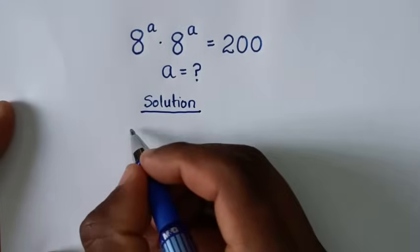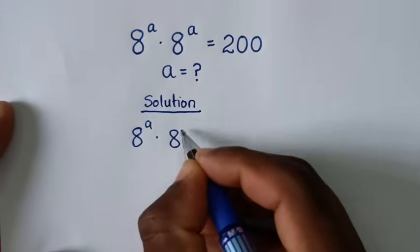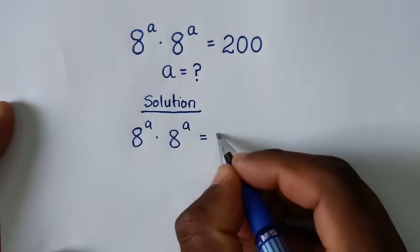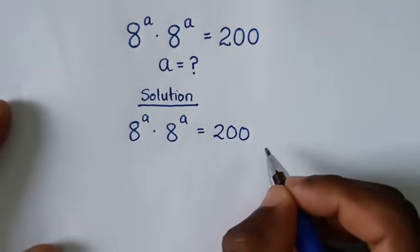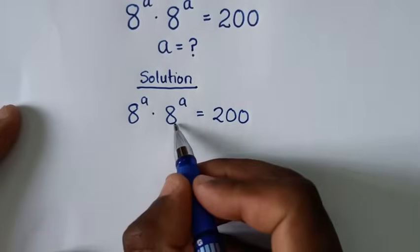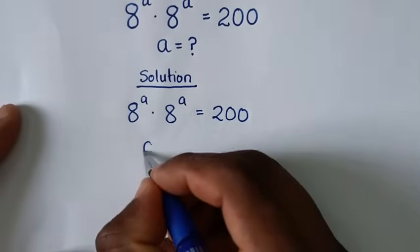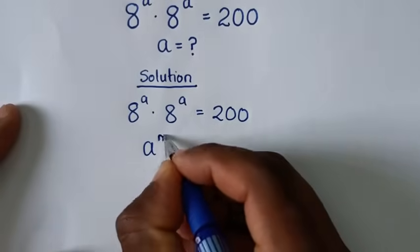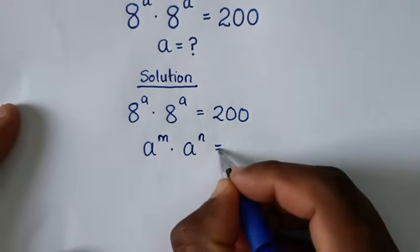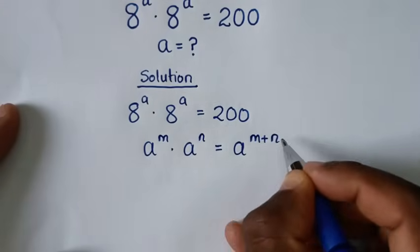From the problem, which is 8 power a times 8 power a is equal to 200. Here, 8 power a times 8 power a is in the form of a power m times a power n, which is equal to a power m plus n.